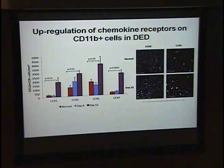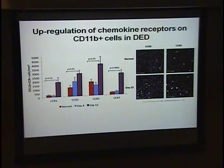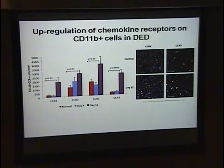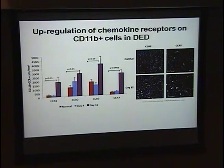Secondly, we looked at chemokine receptor expression on CD11B cells, and we found an upregulation of chemokine receptors on these cells at day 12, which was statistically significant, but not at day 4. This was apparent for all four chemokine receptors that we looked at.